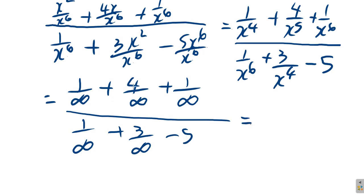So all of these with number over infinity will be 0. So 0 plus 0 plus 0 plus 0 will be 0 up top, over 0 plus 0 minus 5. So the answer here will be 0.